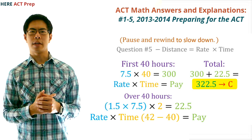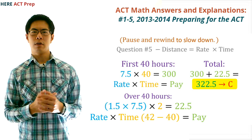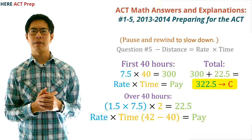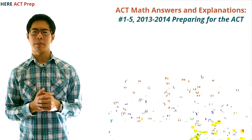Finally, we add 300 and 22.5 together, which gives us $322.50. So the answer is C.